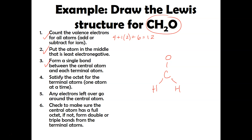Now we have to satisfy the octet for the terminal atoms. The two hydrogens aren't getting any more electrons around them. Oxygen, on the other hand, needs some electrons. We have six electrons in our picture right now, so I continue adding: seven, eight, nine, ten, eleven, twelve. I ran out of electrons, so step four is done. Step five: any electrons left over go around the central atom — I don't have any more electrons left over.